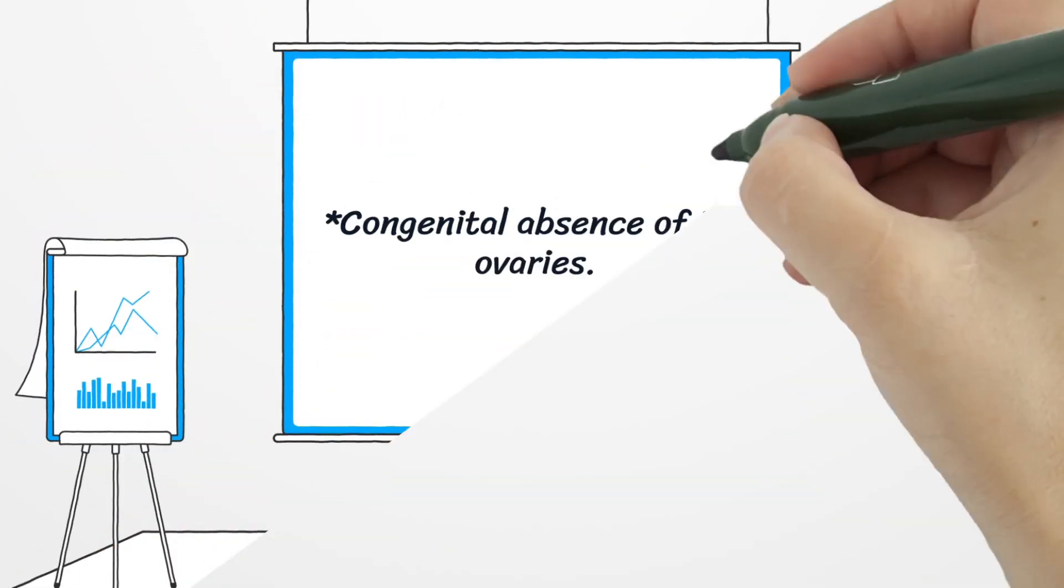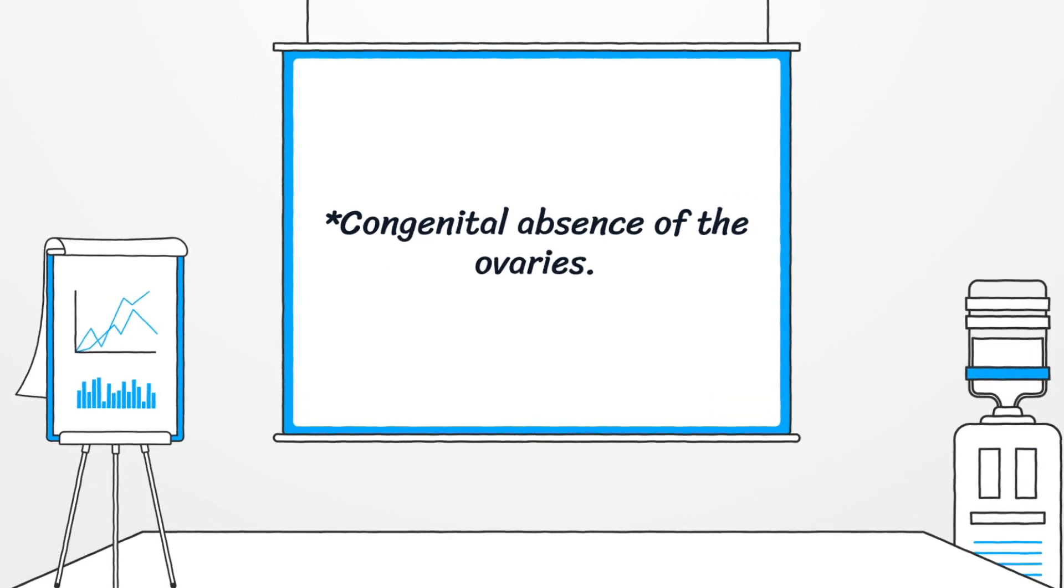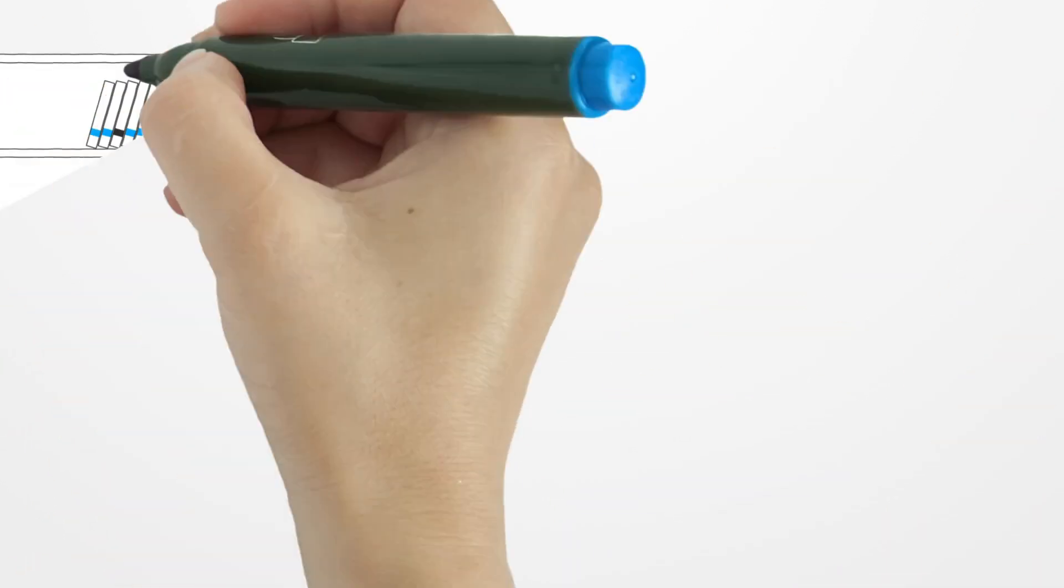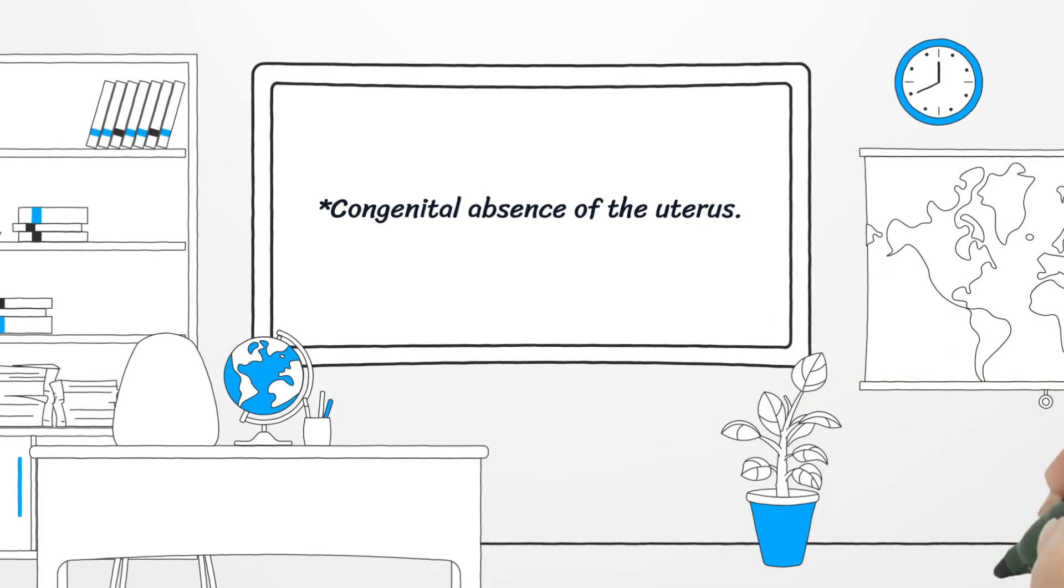Congenital absence of the ovaries results in primary amenorrhea and the absence of secondary sex characteristics. Primary amenorrhea occurs with congenital absence of the uterus. The patient may develop breasts.